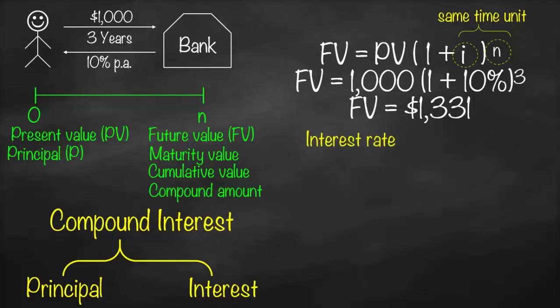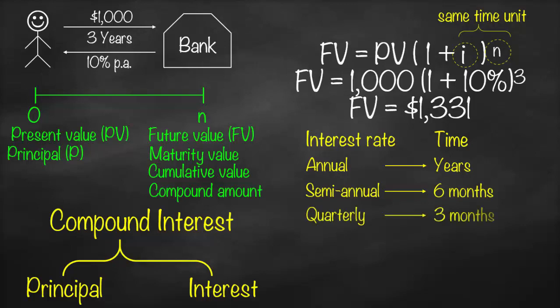So if interest rate is annual, I need to change time to be in years. If interest rate is semi-annual, I need to change time to be every six months. If interest rate is quarterly, I need to change time to be every three months.